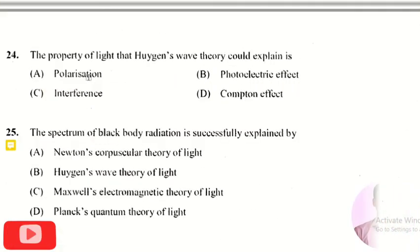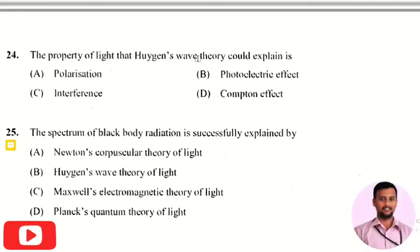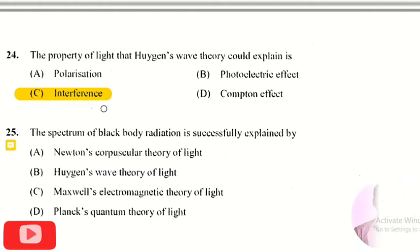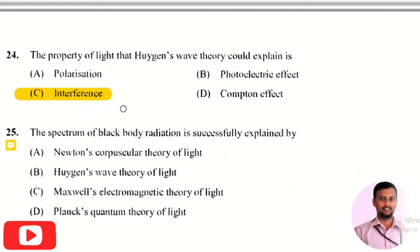The next question is: the property of light that Huygens wave theory could explain is? The right answer is option 3, that is interference. So interference is well described by Huygens wave theory.